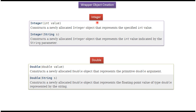Hi, in this video tutorial I will cover how to create wrapper class objects. Integer is a wrapper class. Using these two constructors we can create an Integer object. One constructor accepts primitive data type int and another constructor accepts string.